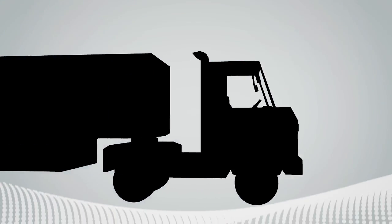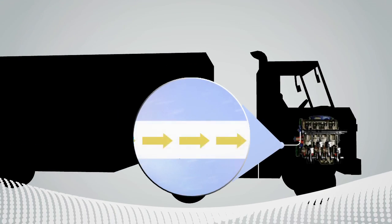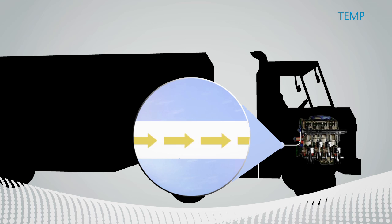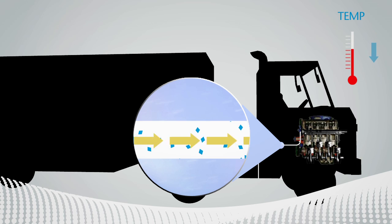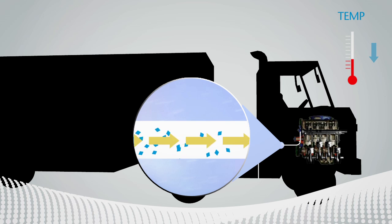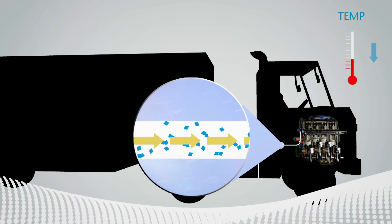In warm temperatures wax molecules remain dissolved, so diesel fuel flows freely. As temperatures drop, fuel reaches its cloud point, the temperature at which wax molecules start to crystallize.